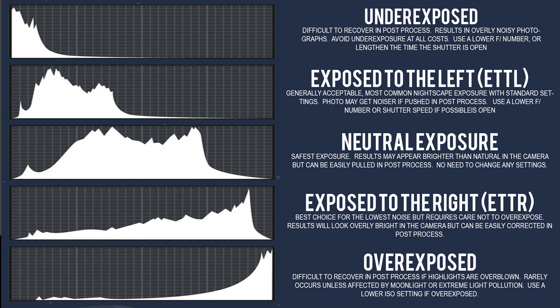The next thing we need to go over is the five exposure levels of the histogram: underexposed, exposed to the left (ETTL), neutral exposure, exposed to the right (ETTR), and overexposed. Those are the five exposure levels, and once you understand them it's going to help you while on set or taking photos.